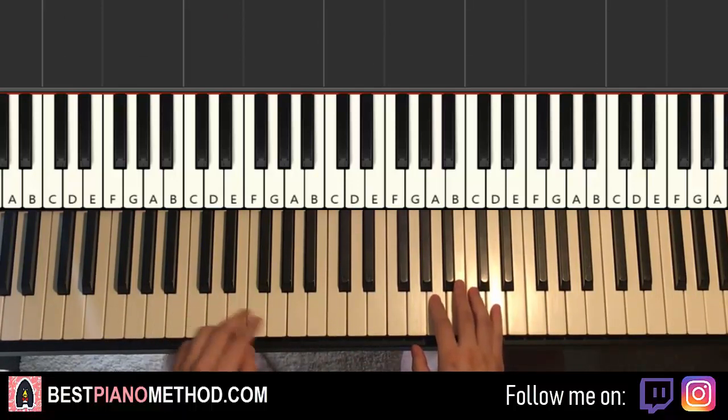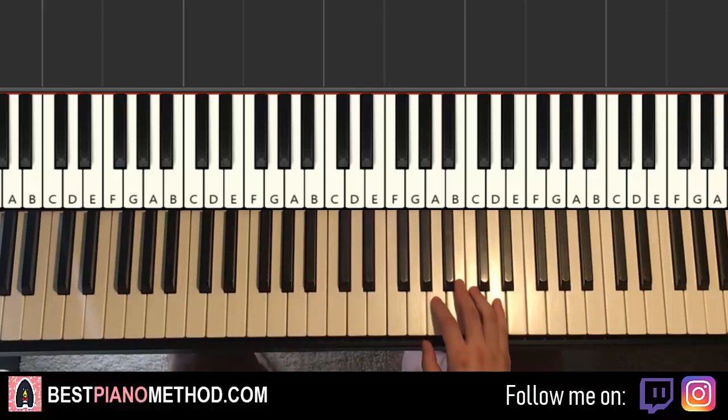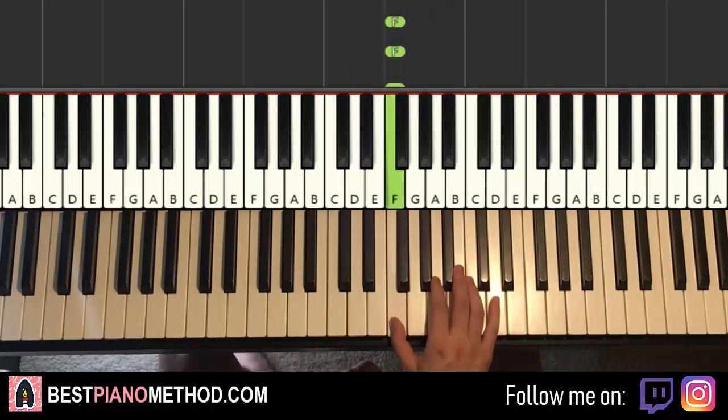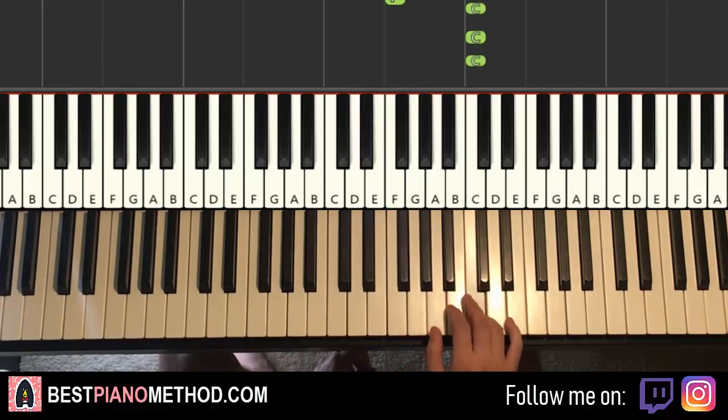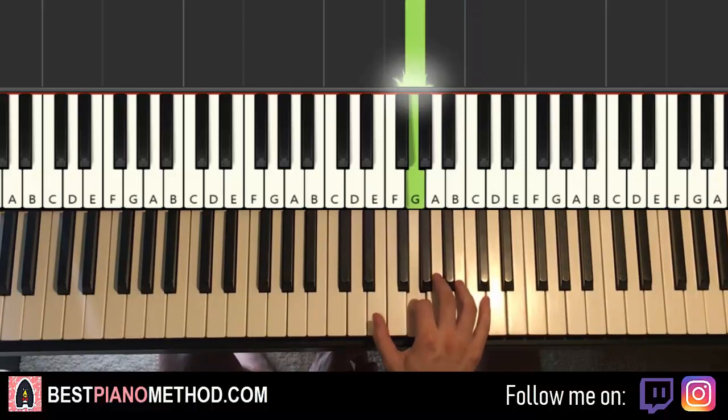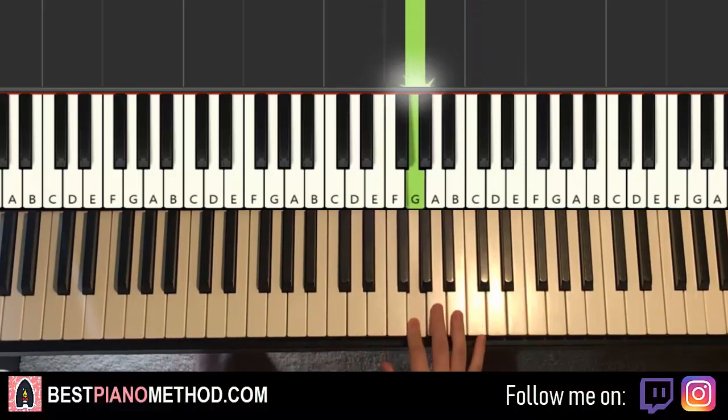Now, moving on to the second part. Okay? Right hand continues. A little bit different this time. It goes eight A's. One, two, three, four, five, six, seven, eight. Down to F for eight times. Up to C for eight times. Down to G for six times. One, two, three, four, five, six. Down to E, G. And that's it for the second part for the right hand.